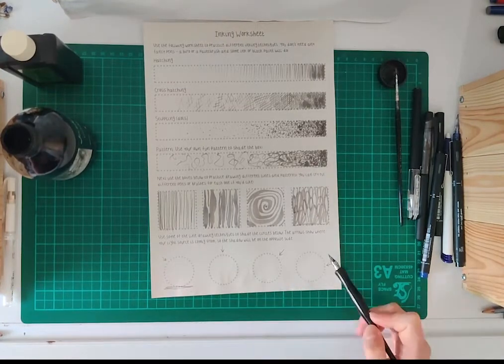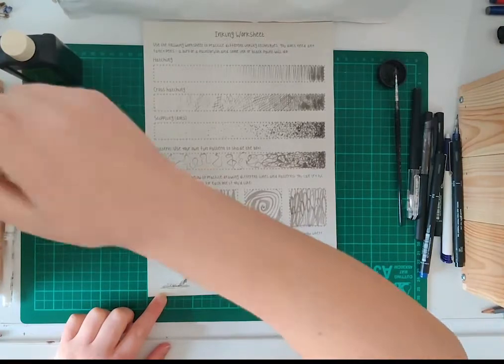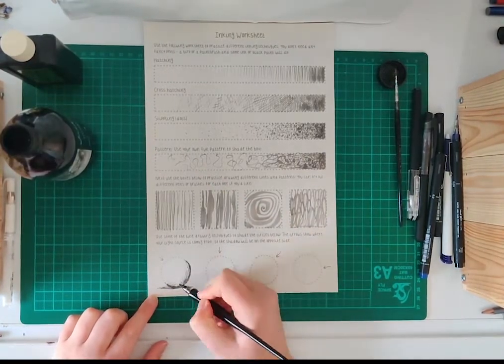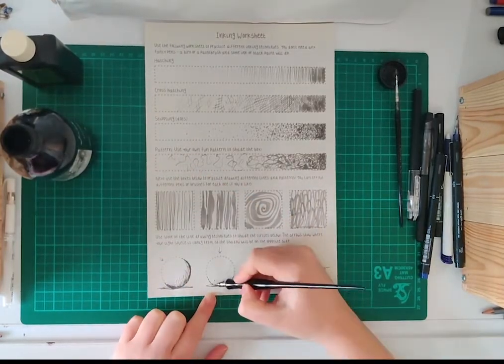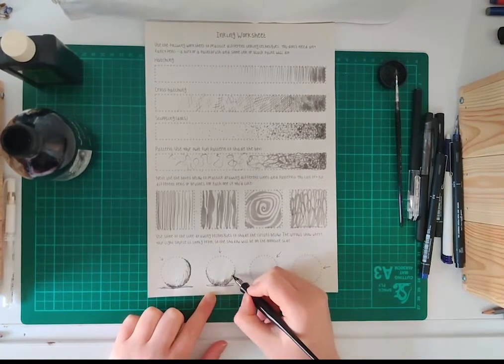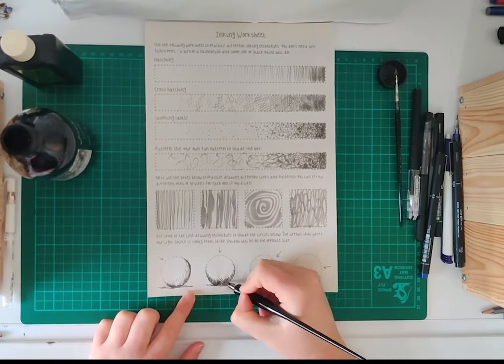Lastly, practice shading the circles using the techniques that we learned earlier. Imagine our circle is a ball and there's a light shining on the ball. On your worksheet, there are arrows to show which direction the light is coming from. Where the light hits will be really bright, but the opposite side of the ball will be in shadow, so I'm going to shade the other side here.